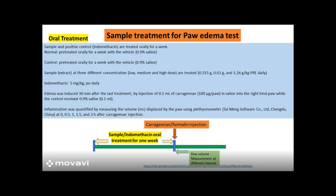Here we can see three different extracts at three different concentrations — low, medium, and high dose. We can do oral treatment for around one week, and then start the inflammation by injecting carrageenan. Here you can see that after the last dose of the sample, inflammation has been induced by giving the carrageenan.